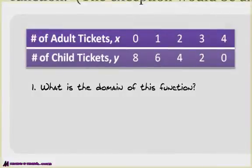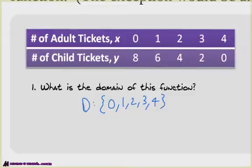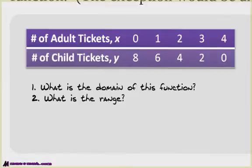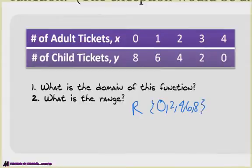You use these funky little brackets to write the domain: {0, 1, 2, 3, 4}. Notice I didn't put zero through four, because you can't buy half a ticket. What's the range then? Remember, the range is the y values. So the range is {0, 2, 4, 6, 8}. Notice that I put it in numerical order. That's how it's written, and if we were to graph it, it's going to be 0, 2, 4, 6, and 8.